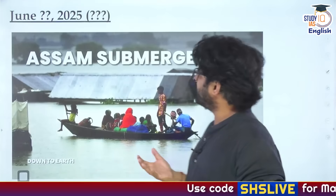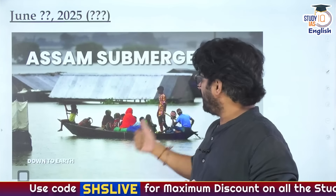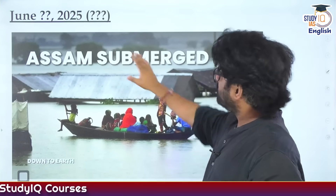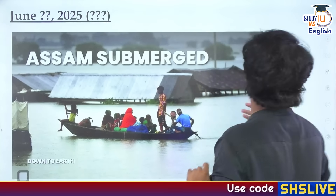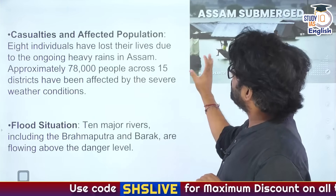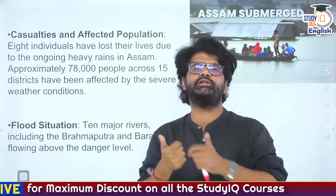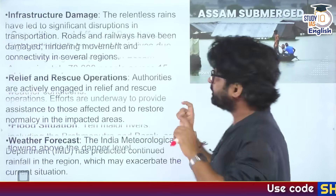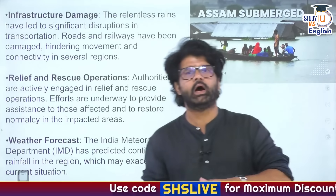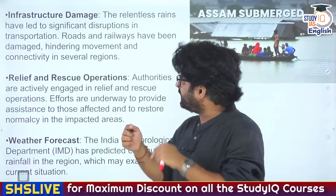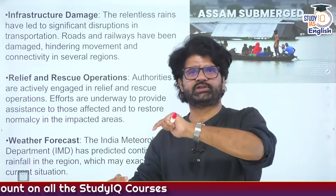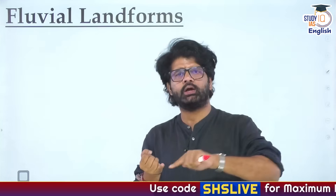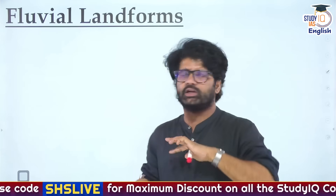I stayed in Guwahati, Bhangagarh area, so I have seen it. Guwahati is relatively less impacted by Assam floods, but even Guwahati is impacted this time. Eight individuals have lost their lives, around 78,000 have been affected - these are official figures; non-official figures can be more. Flood situation in 10 major rivers. Assam faces a lot every year because of these floods, they keep rebuilding and then the same thing happens the next year.